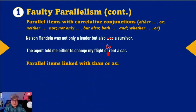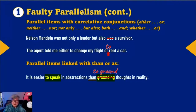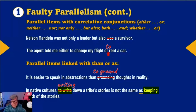Here are parallel items linked with another kind of conjunction — 'than' or 'as' used as adverbs as conjunctions. It's easier to speak in abstractions than grounding. What is to the left of 'than' has to be equal to what is to the right of 'than': it's easier to speak than to ground. Same with 'as': in native cultures, to write down a tribe's story is not the same as keeping track. What is to the left of 'as' must match the right. We could change either one: writing down is not the same as keeping.